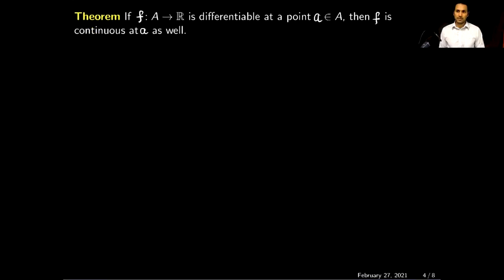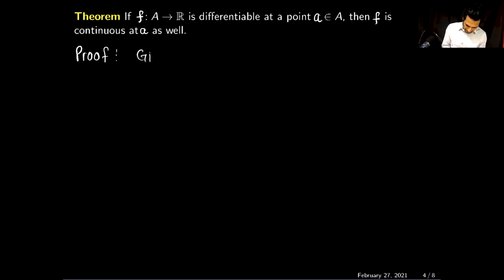Next I will use the definition of differentiability and prove this important result: if a function is differentiable at a point, then the function must also be continuous at that point. Note that the converse of this theorem is not true, because in the previous example I showed a continuous function which was not differentiable. So now let's prove this theorem.